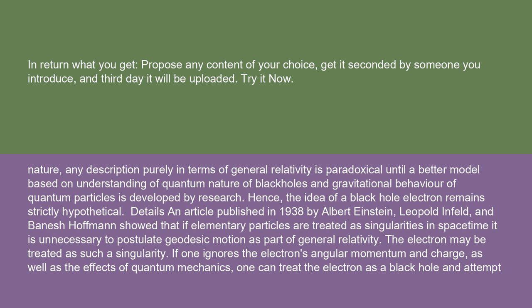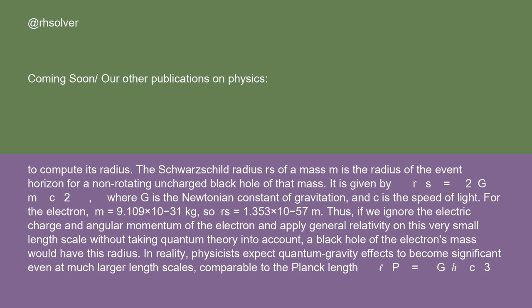If one ignores the electron's angular momentum and charge, as well as the effects of quantum mechanics, one can treat the electron as a black hole in attempt to compute its radius. The Schwarzschild radius RS of a mass M is the radius of the event horizon for a non-rotating, uncharged black hole of that mass. It is given by RS = 2GM/c², where G is the Newtonian constant of gravitation, and c is the speed of light.